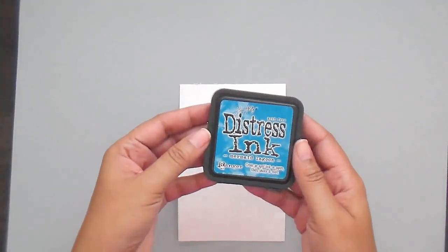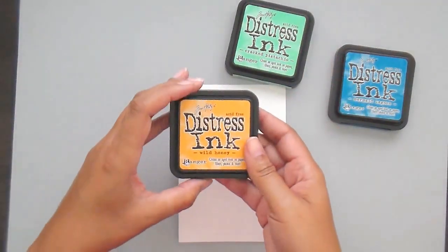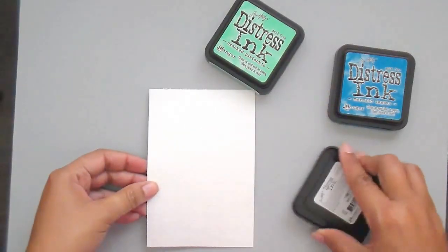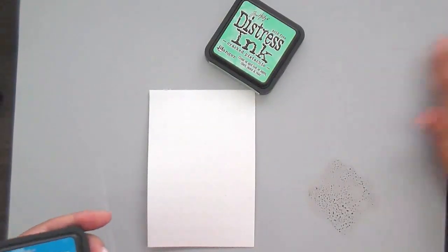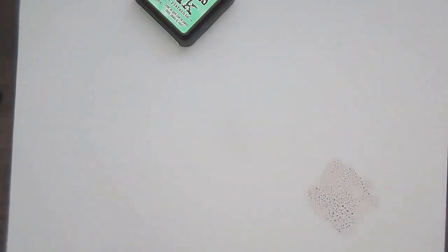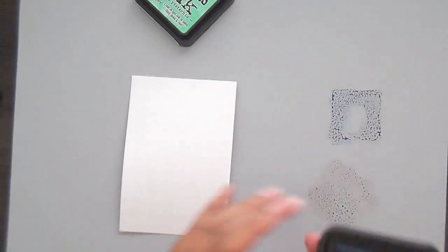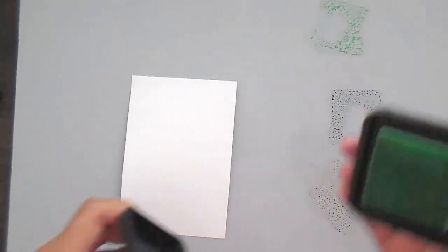So I'm going to grab some of my distress inks - mermaid lagoon, and this is cracked pistachio and wild honey. I love this color combination together. It's masculine but it can also be a little bit feminine as well. So I'm just going to stamp the pad right onto the Ken Oliver craft mat. Remember I told you guys about this in the review - I absolutely love this craft mat. I'm just going to stamp the ink directly onto it, not make them too close, kind of spread them out just a little bit, and that is what's going to build our color palette for the front of the card.